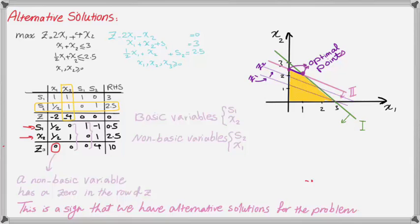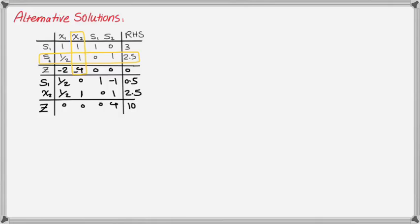As I exit the feasible region, I'm hitting a part of the constraint 2 line that is feasible, so I'm hitting two corner points rather than just one. Each of these corners is an optimal solution to the problem. In this table, S1 is 0.5 and X2 is 2.5, so the current optimal point is X1 = 0 and X2 = 2.5. We can find the other optimal basic point as well. All the points in between are also optimal solutions, but they are not basic — we call a solution basic only when it is a corner point.